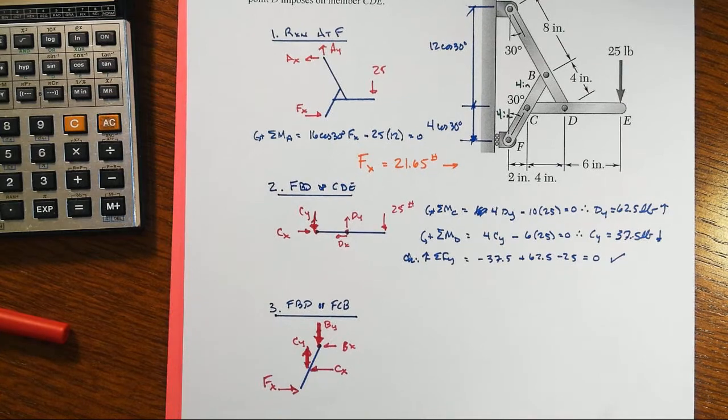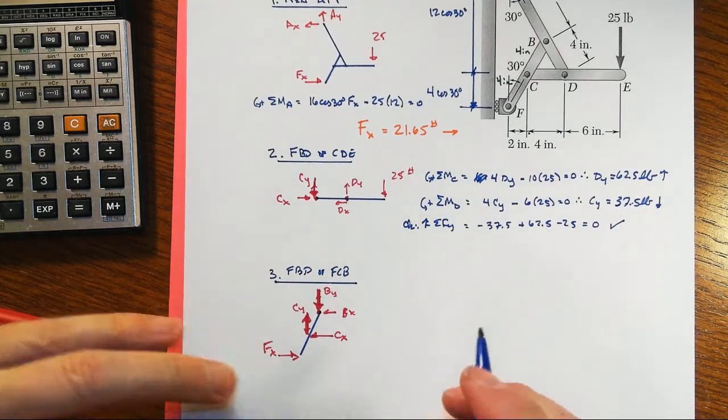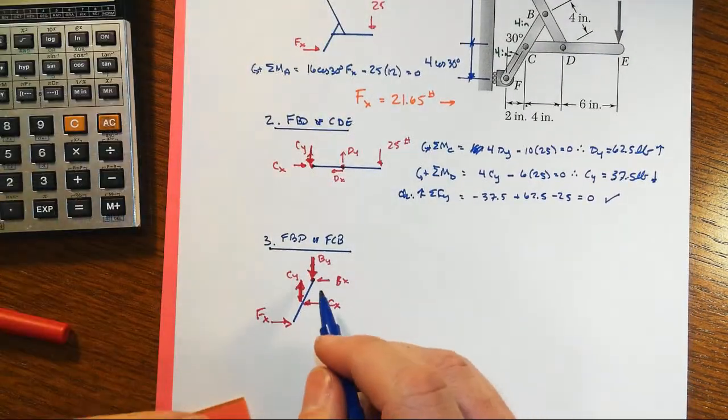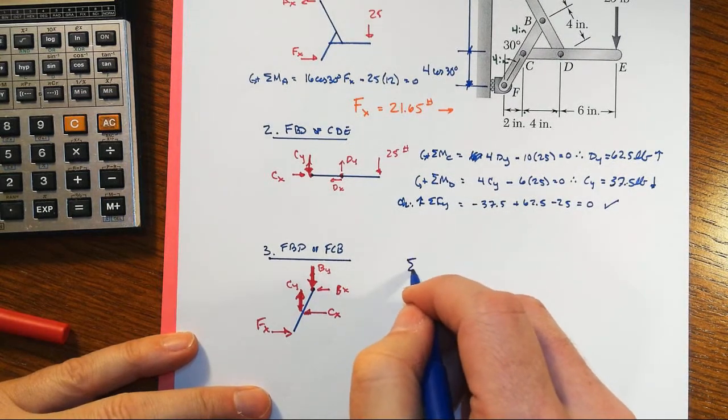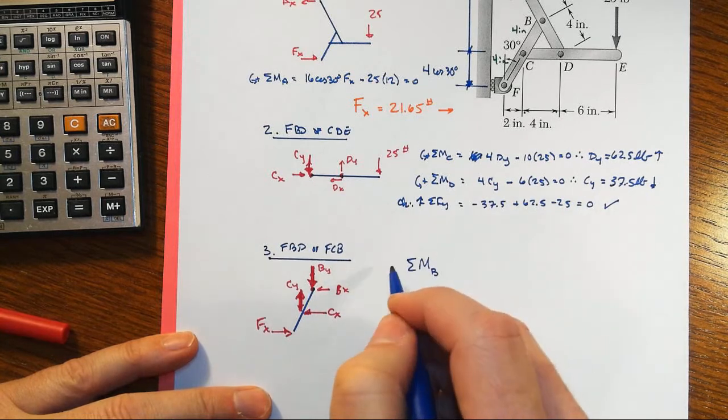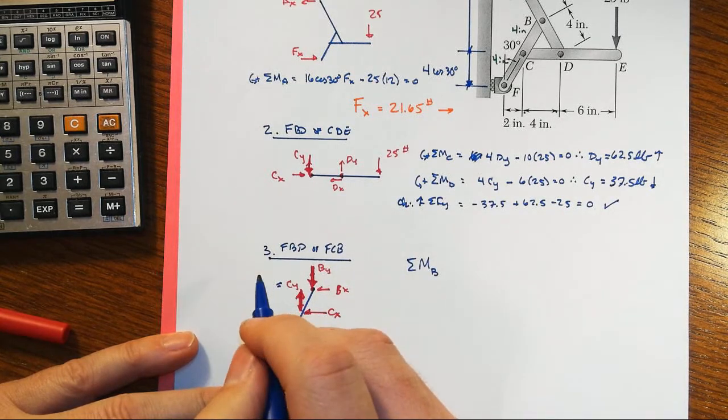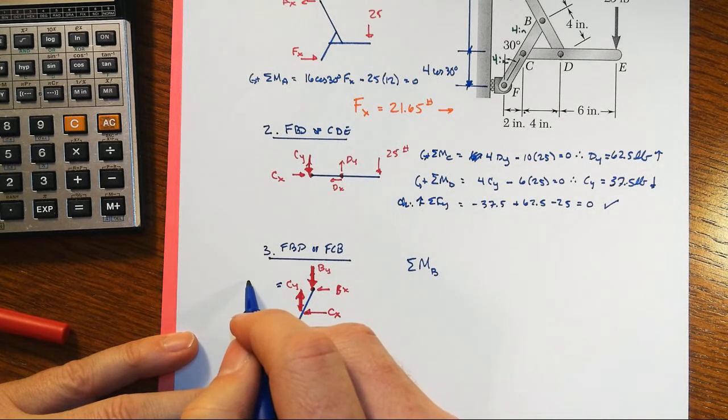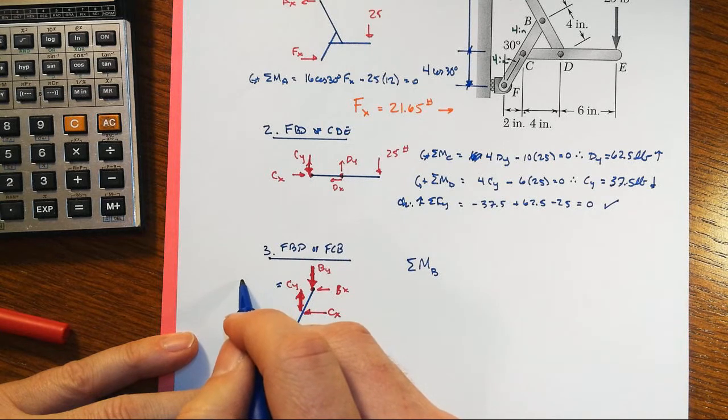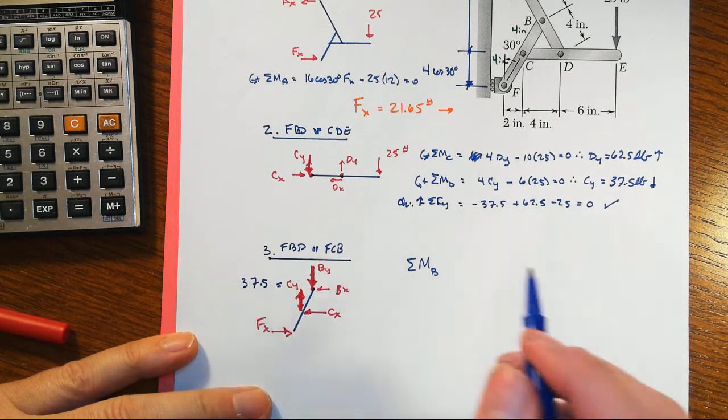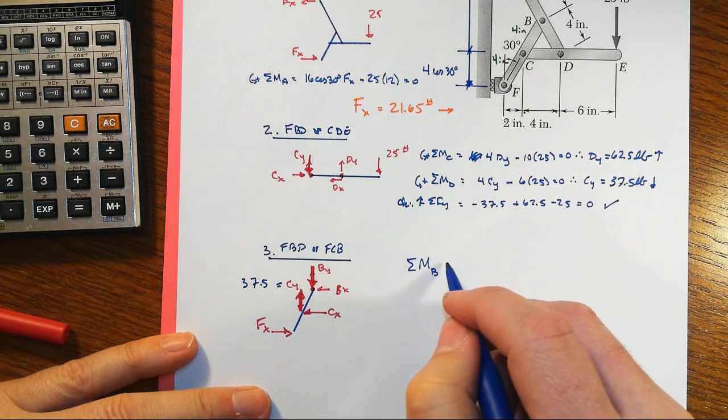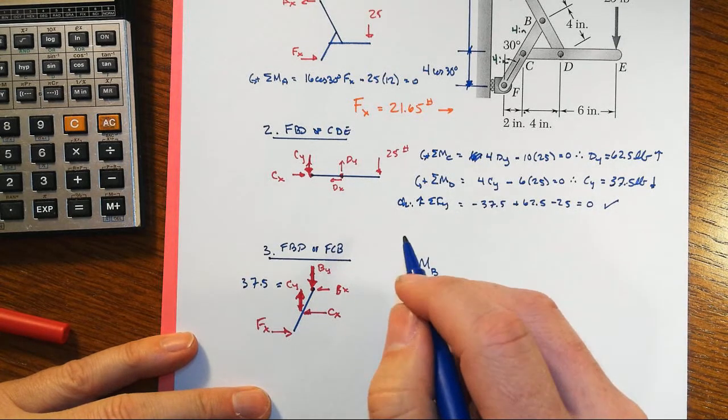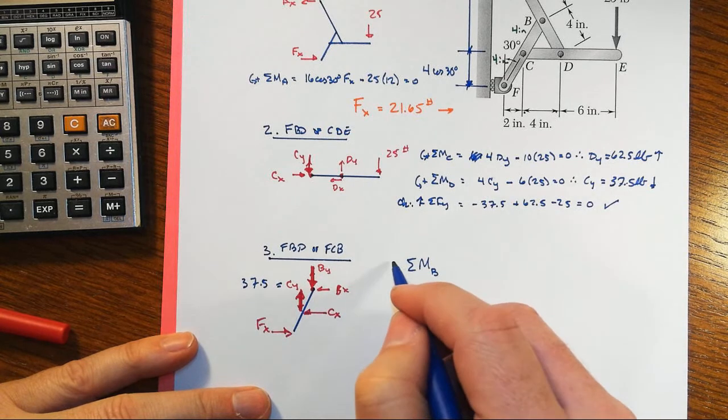Right, that enables us to come down to our members FCB down here. And indeed, we can sum moments about point B. We now know that CY is 37.5 acting up on this member—down on the other one. And let's take, since we're summing moments, we're trying to find CX.